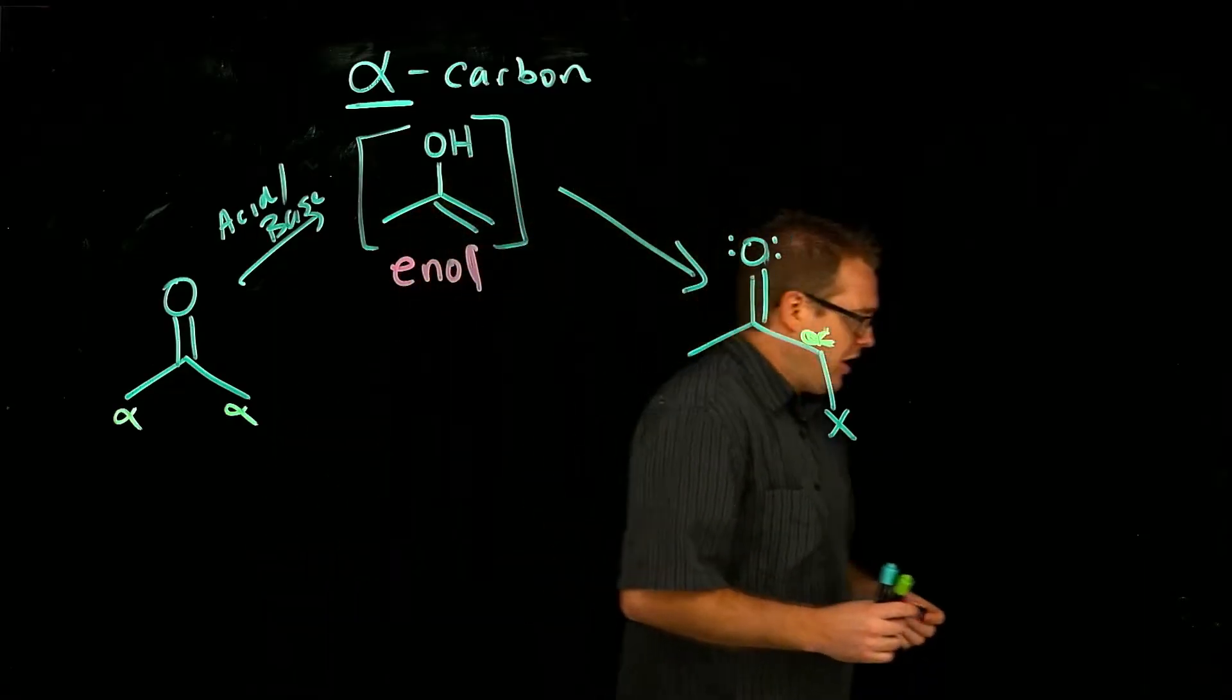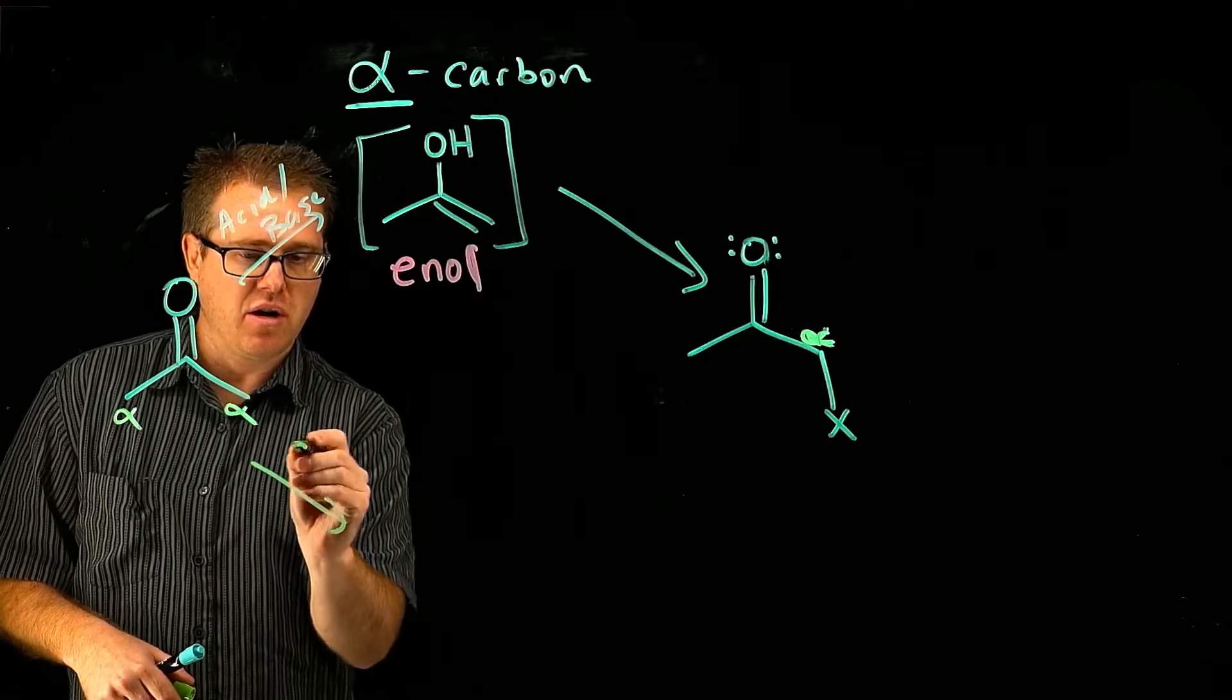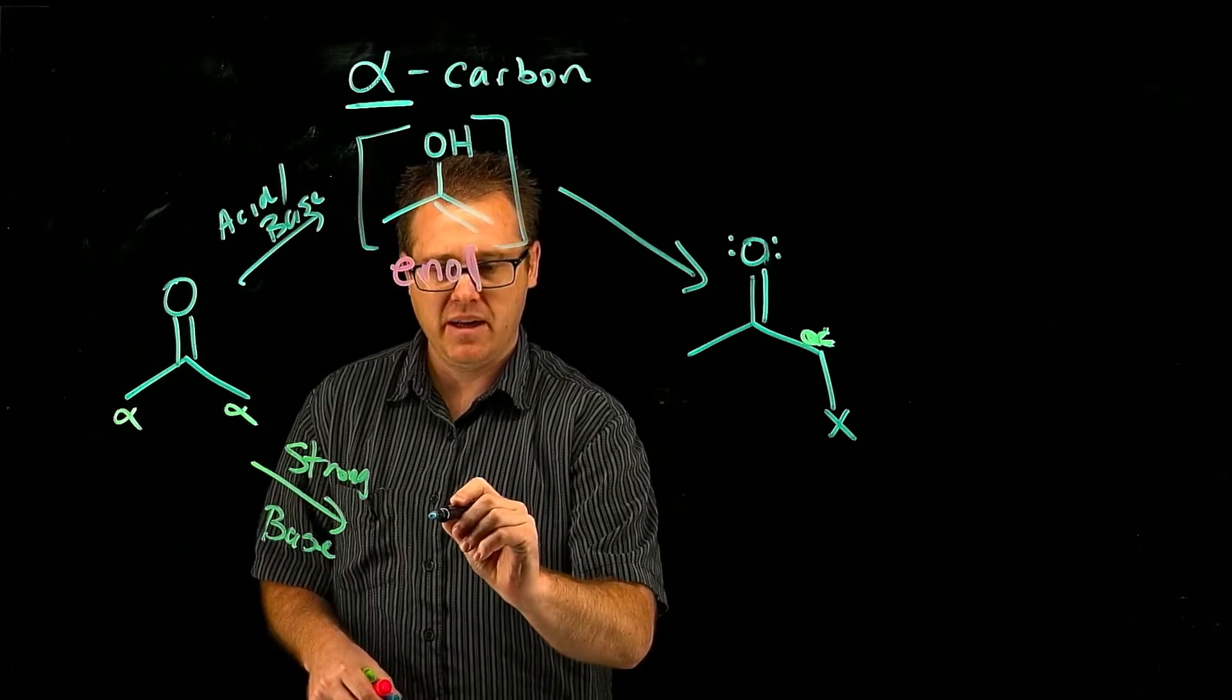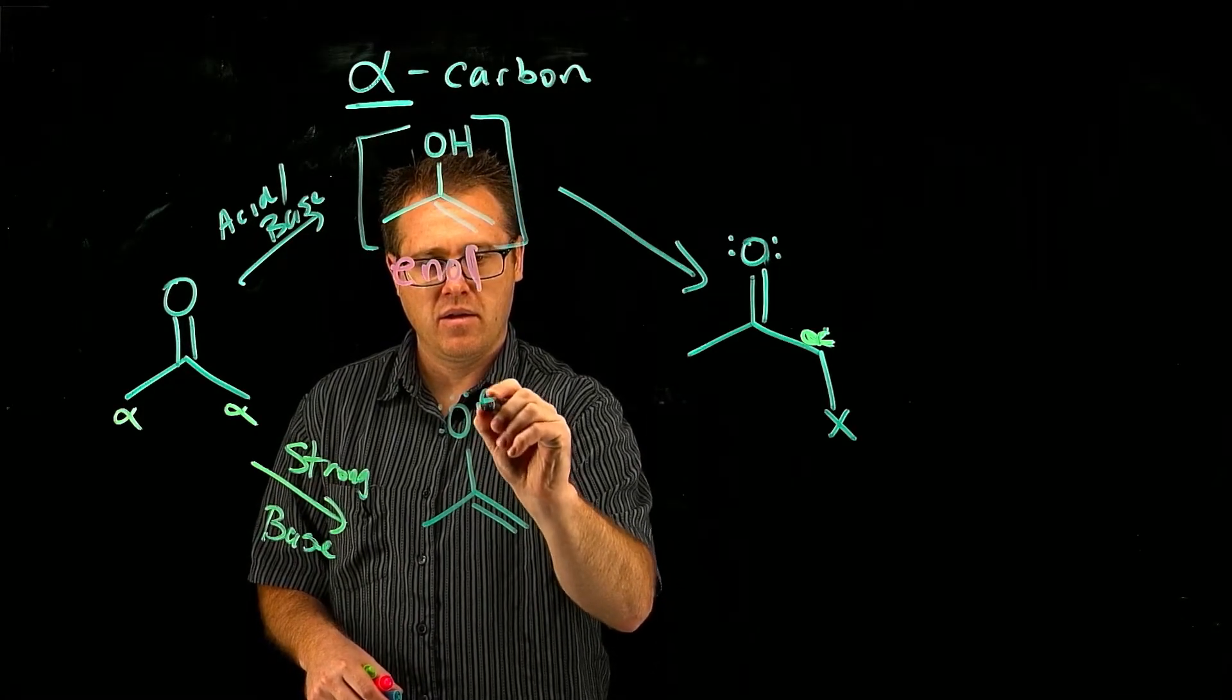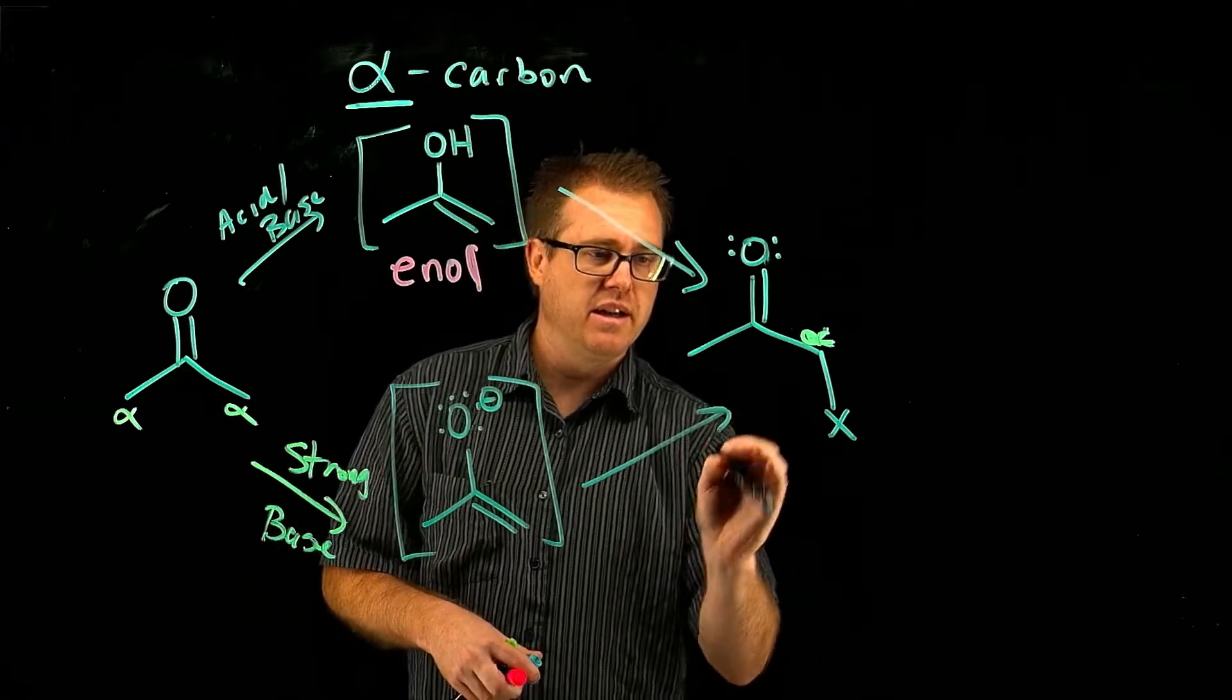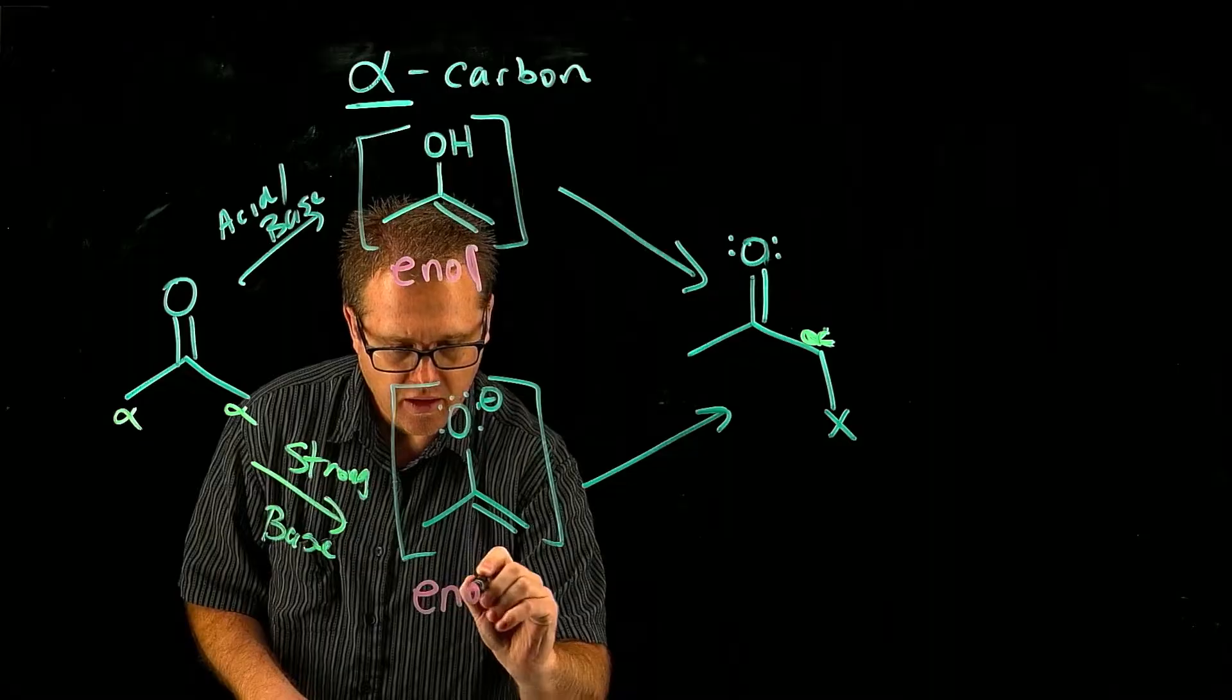Now, you can also do it another way in which you treat it with a strong base. And if you treat it with a strong base, you're going to get an intermediate that looks like this. And then you can take that intermediate and do chemistry to get to that. Now, this right here is called an enolate.